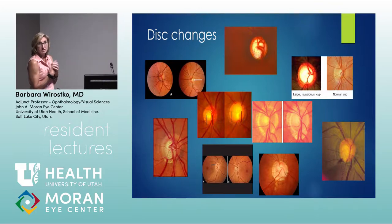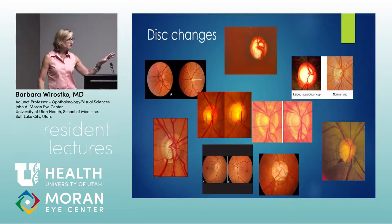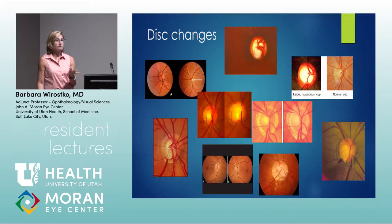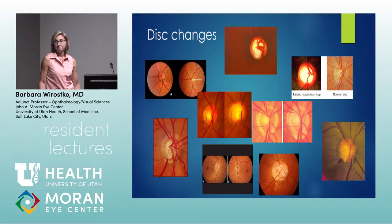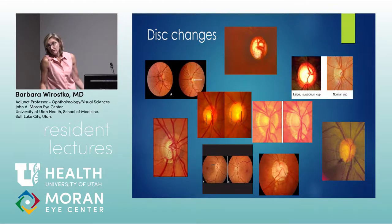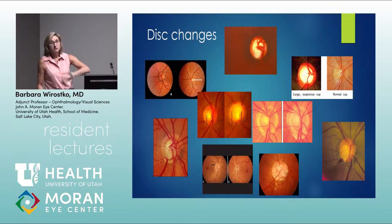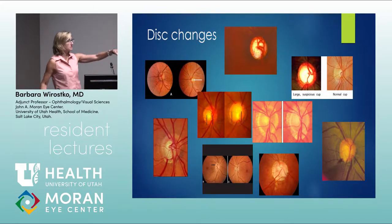If pressure is controlled but you still see a hemorrhage, the glaucoma may still be uncontrolled. We've shifted our workup beyond just IOP — ask about sleep apnea, blood pressure, anticoagulants. Other causes of retinal hemorrhage include diabetes, hypertension, and impending VEIN occlusion. Generally, a nerve fiber layer hemorrhage on the disc means uncontrolled glaucoma even if pressure is 16.